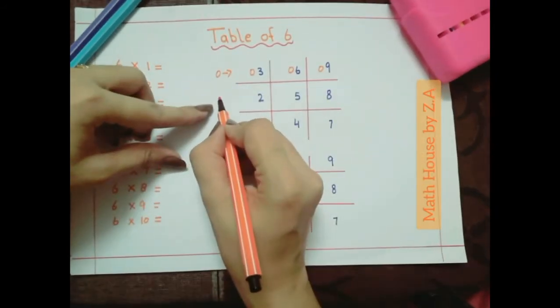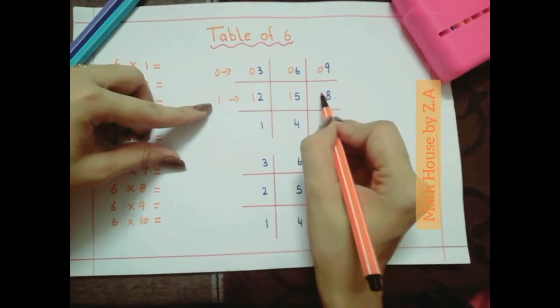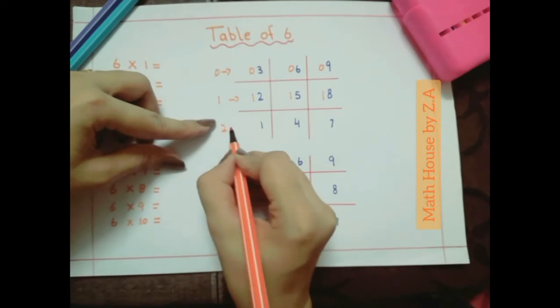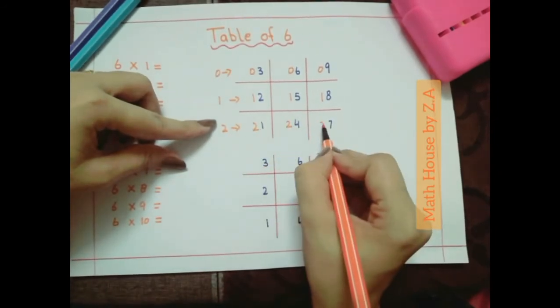After that we will add 1 in the second row. So 1, 1 and 1. Now it's time to add the 2 in third row. 2, 2 and 2.